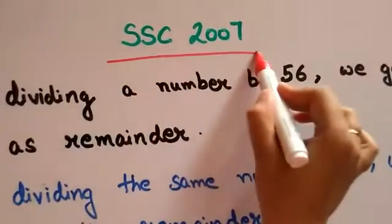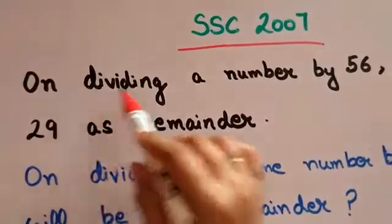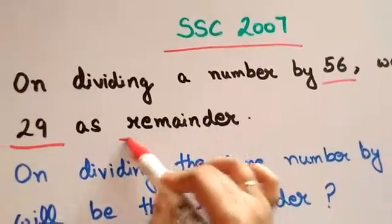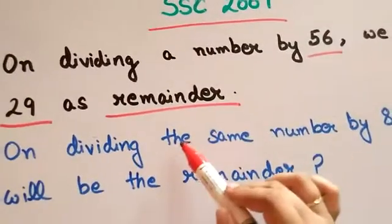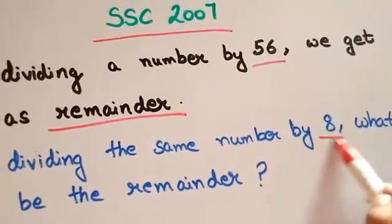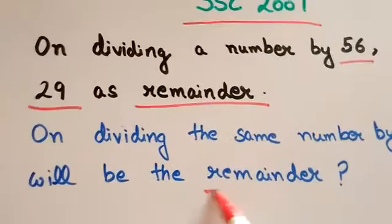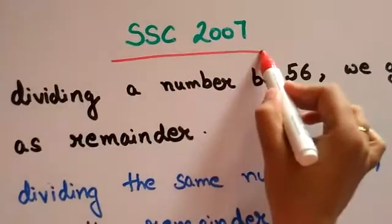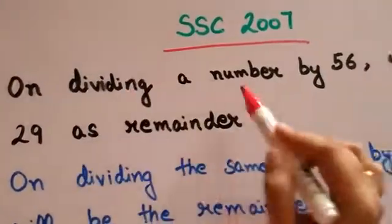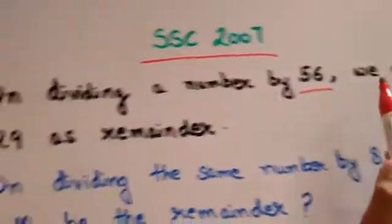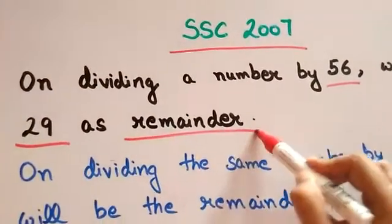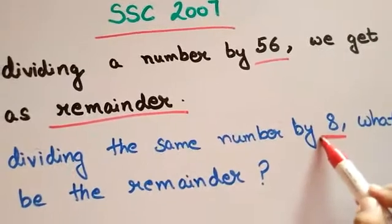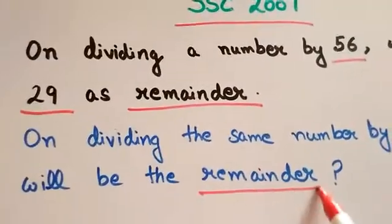SSC 2007 question: On dividing a number by 56, we get 29 as remainder. On dividing the same number by 8, what will be the remainder?